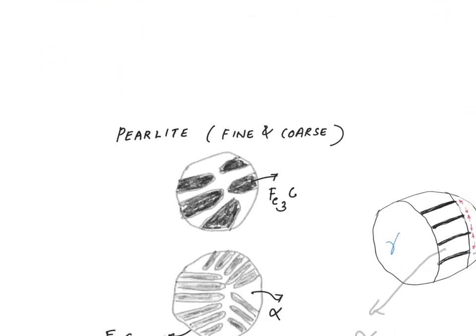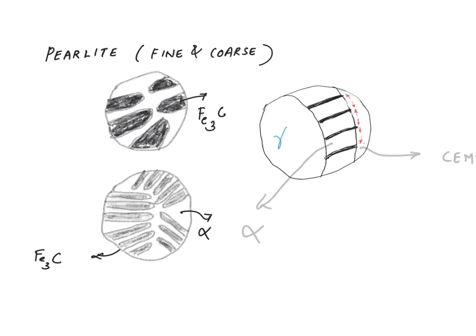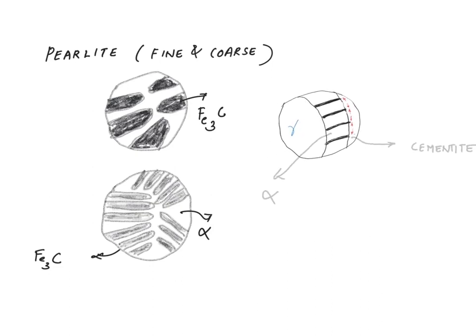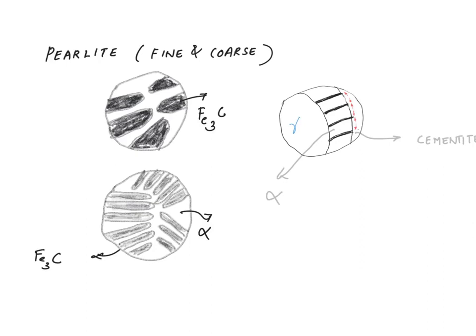Now let me explain why we end up with different pearlite microstructures when we change the temperature of the reaction. Here is the coarse pearlite microstructure and here is the fine pearlite microstructure. As you can see, the Fe₃C layers are very thick in coarse pearlite compared to fine pearlite. Coarse pearlite forms when isothermal transformation is performed at temperatures near the eutectoid temperature, because at those high temperatures like 600 or 650 degrees centigrade, diffusion rates are very high.